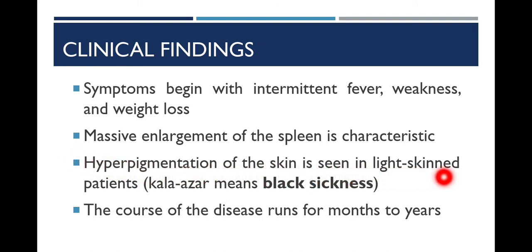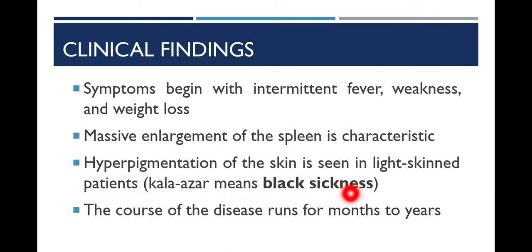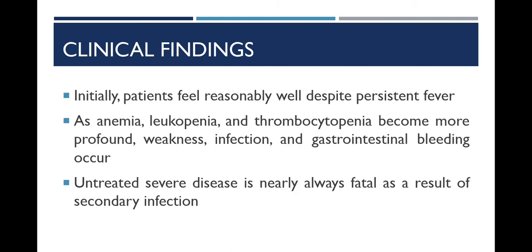Hyperpigmentation of the skin can be seen in light-skinned patients; due to this hyperpigmentation, the name Kala-azar or 'black sickness' was given to this disease historically. The course of the disease can run from months to years depending on immune system, treatment, age, and other factors. If left untreated, the patient initially feels reasonably well despite persistent fever, but as anemia, leukopenia, and thrombocytopenia become more pronounced, weakness, secondary infection, and gastrointestinal bleeding begin. Untreated severe disease is nearly always fatal.